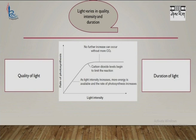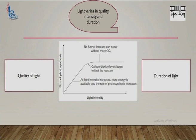Light varies in quality, intensity, and duration. In terms of quality of light, light with a wavelength of 400 to 700 nanometers favors the rate of photosynthesis. In terms of light intensity, as light intensity increases, the rate of photosynthesis also increases. But at a certain point, the rate of photosynthesis will not increase further — either because limiting factors such as carbon dioxide are not available, or because the chloroplast gets damaged at high light intensity. Long duration of light also favors the rate of photosynthesis.